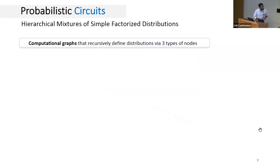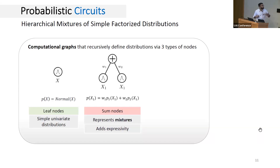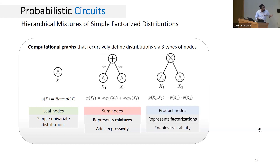The term probabilistic circuits, or PCs, was coined recently by Yujia Choi and others as a unified notion encompassing several generative models that represent probability distributions as computational graphs. These graphs comprise three types of nodes: leaf nodes, which represent simple tractable univariate distributions; sum nodes, which compute a convex combination of their children's distributions, adding expressivity through mixtures; and product nodes, which compute a product of children's distributions, encoding factorizations or independences that enable tractability for probabilistic inference.